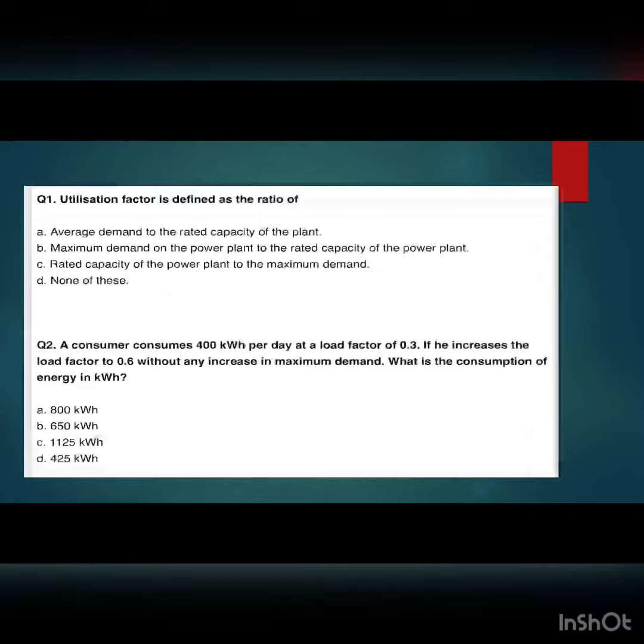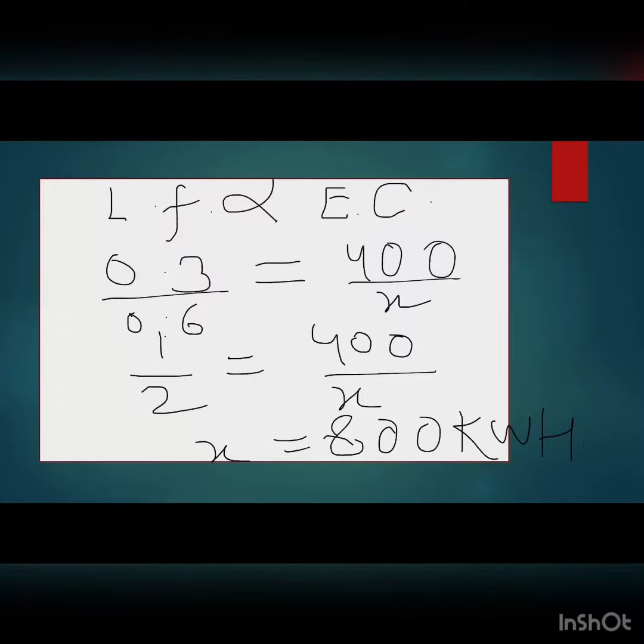Maximum demand is constant in both cases, so we can say that load factor is directly proportional to energy consumption. In the first case, load factor is 0.3, so 0.3 is directly proportional to 400 kWh. Similarly, for the second equation, 0.6 is proportional to X, where we need to find the value of X.